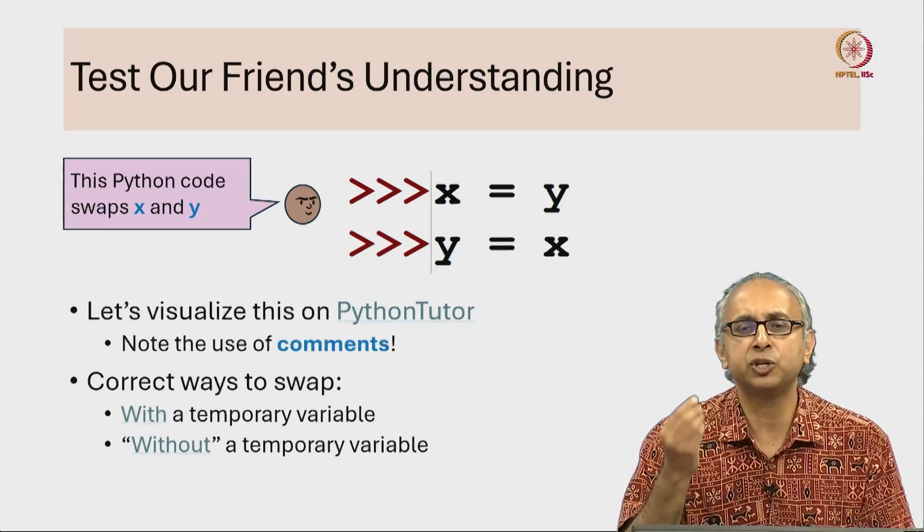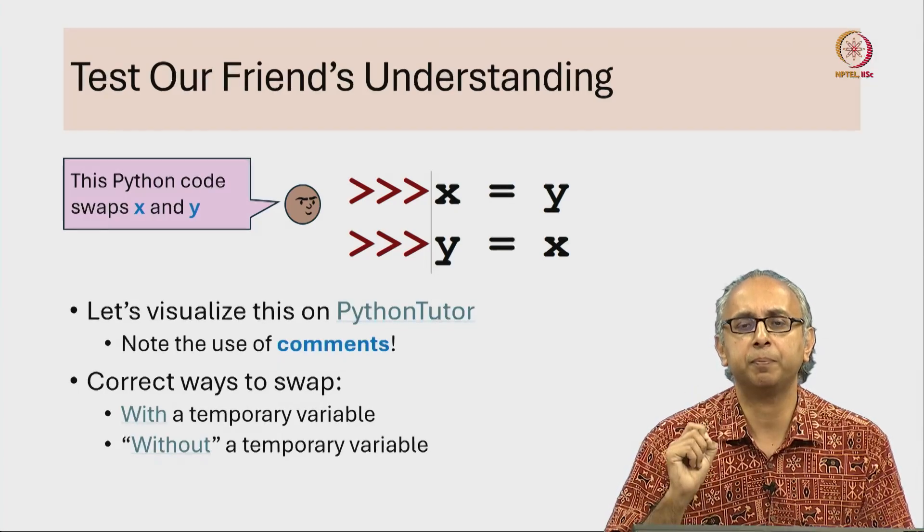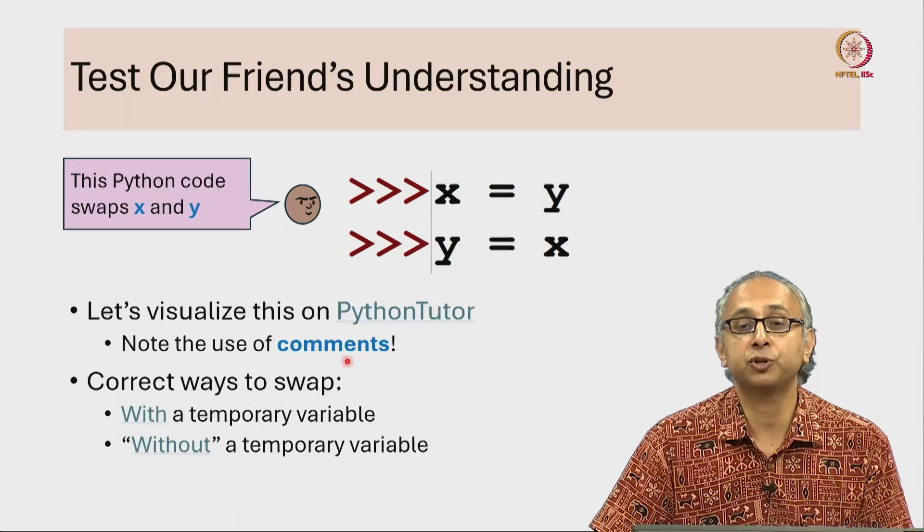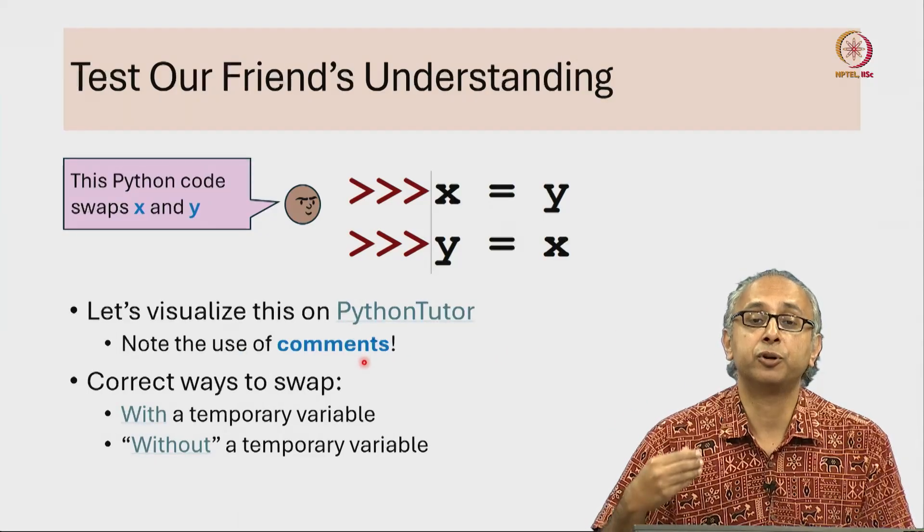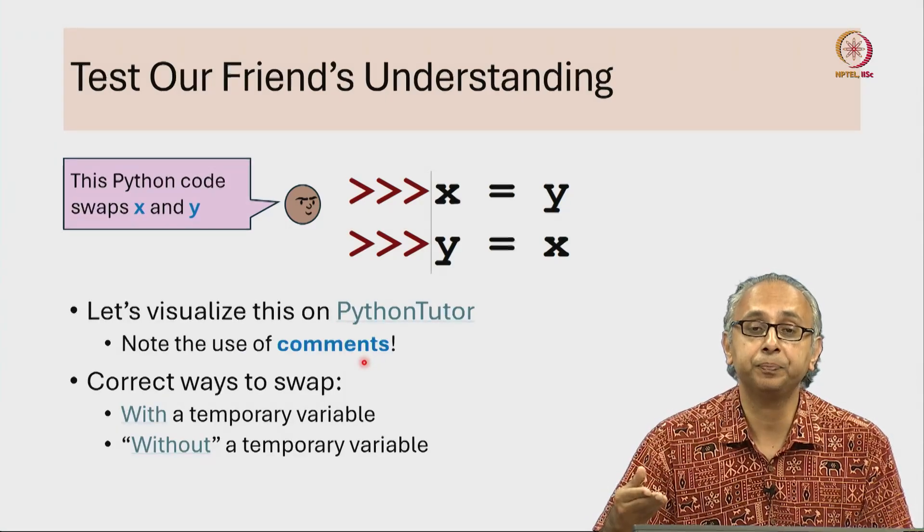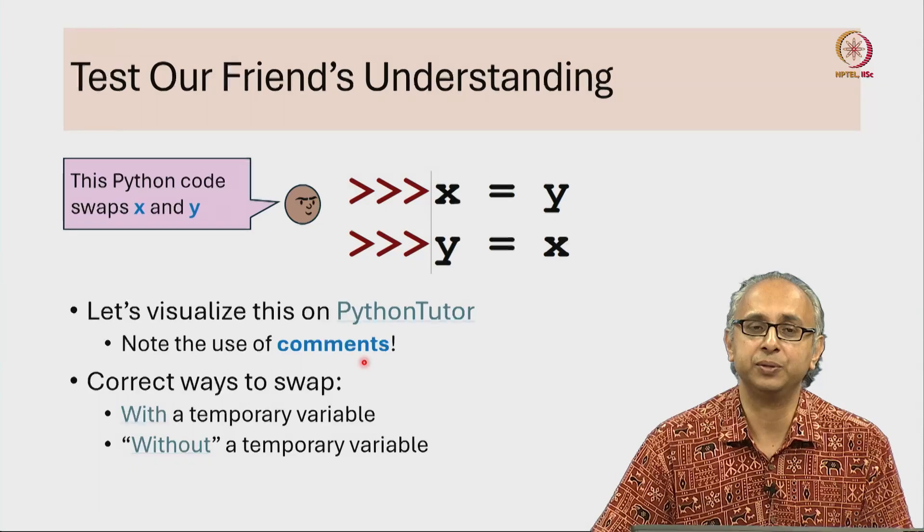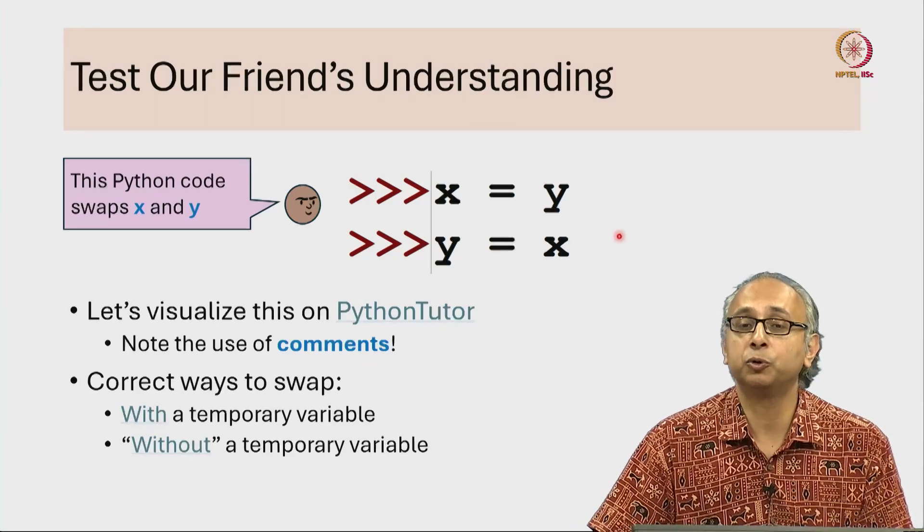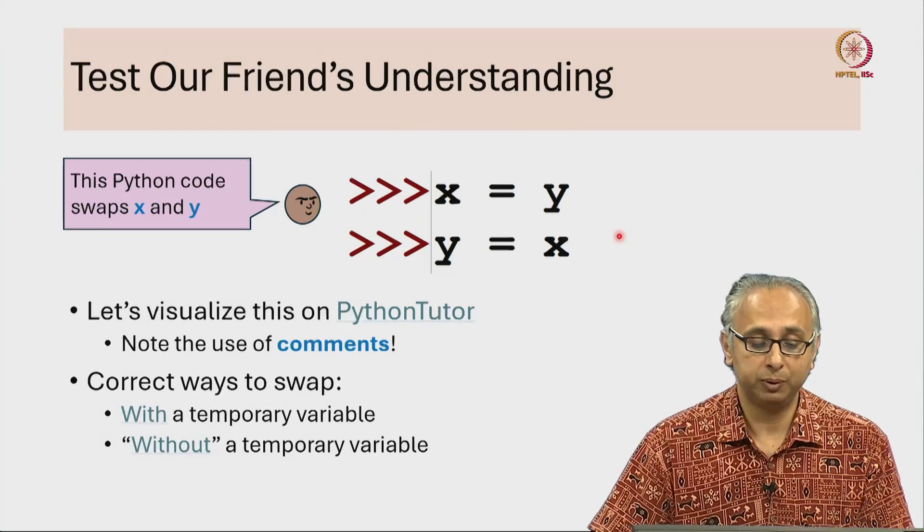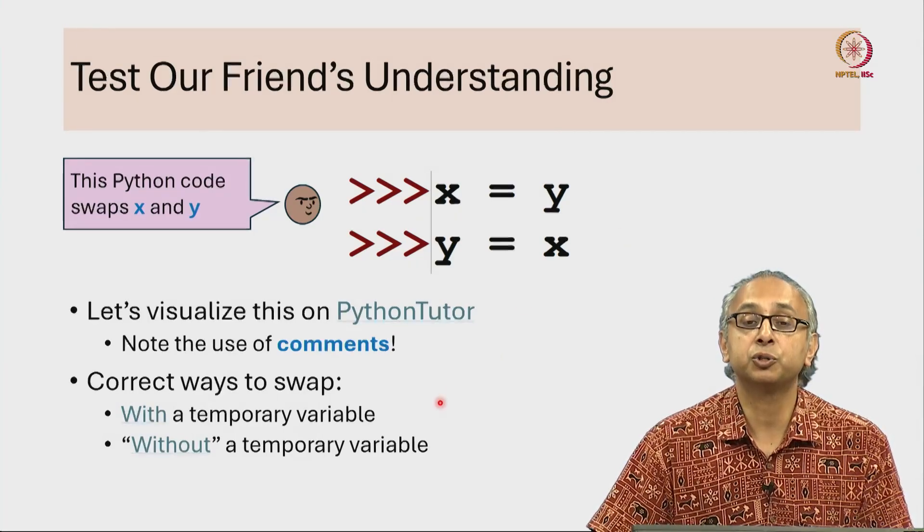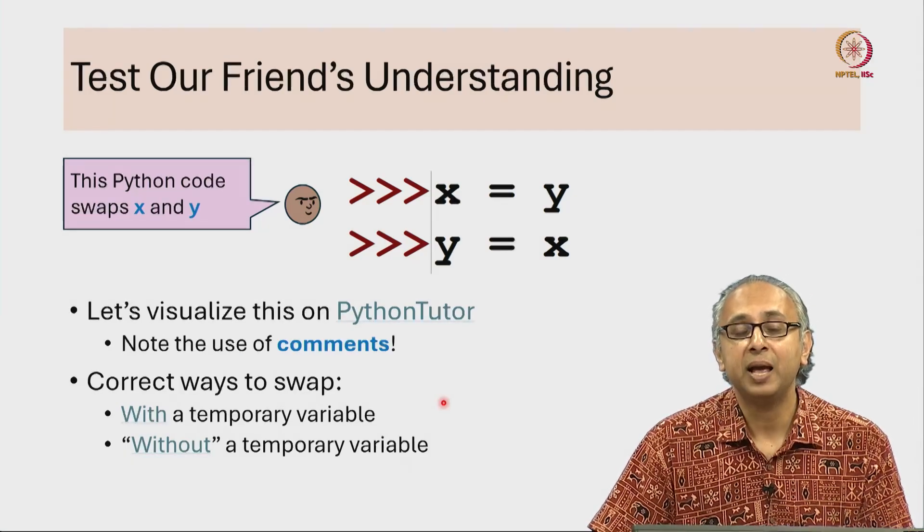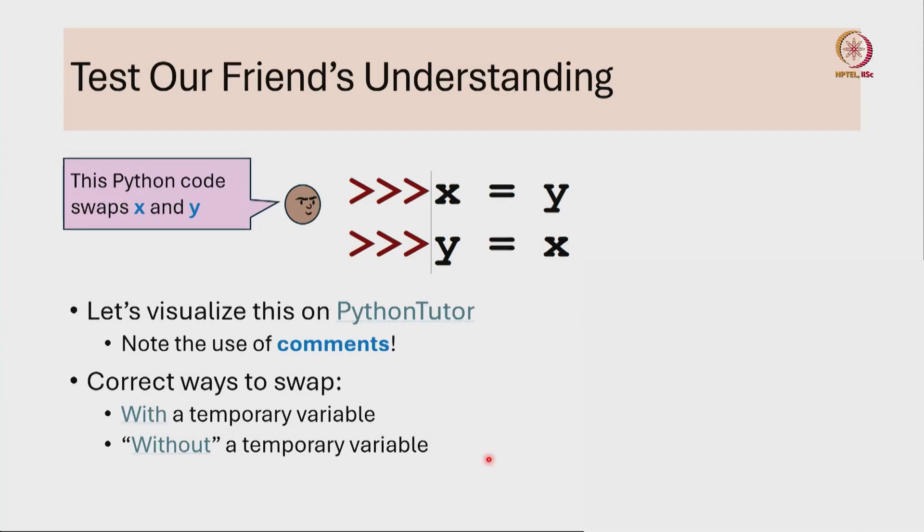The code that I will show you will make use of comments which is a useful way for a programmer to indicate what the code is doing in natural language. And we will see that this particular code does not swap the value of the two variables. We will see a correct way to swap the value of two variables, both with what is called a temporary variable and then without a temporary variable.